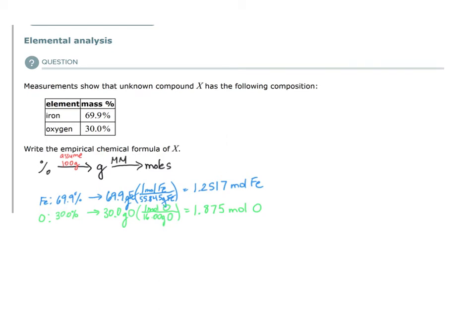Once we have mole amounts, then we can determine the mole ratios by dividing by smallest mole amount. If we look here, which one of these is the smallest mole amount? That would be 1.25, which is less than 1.875.